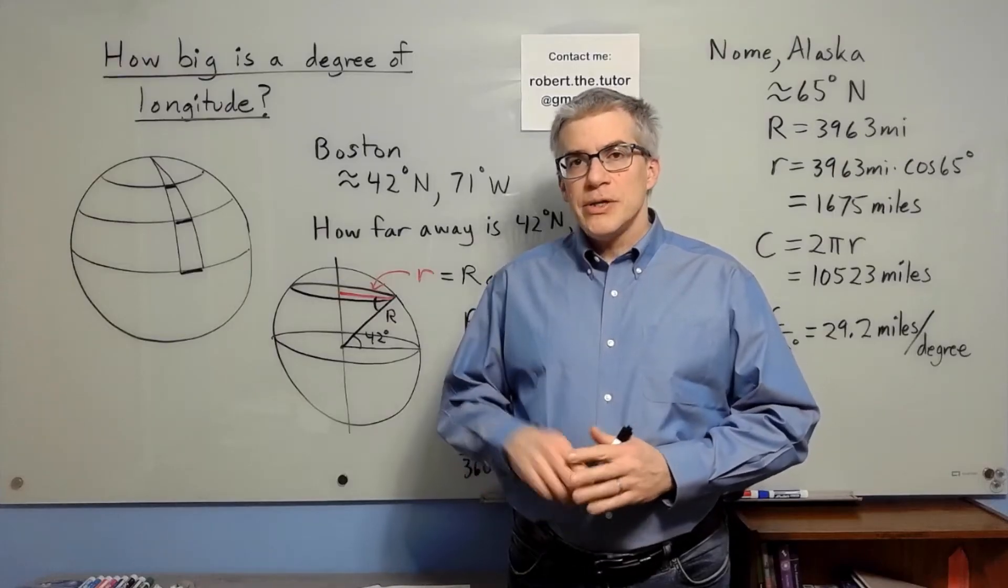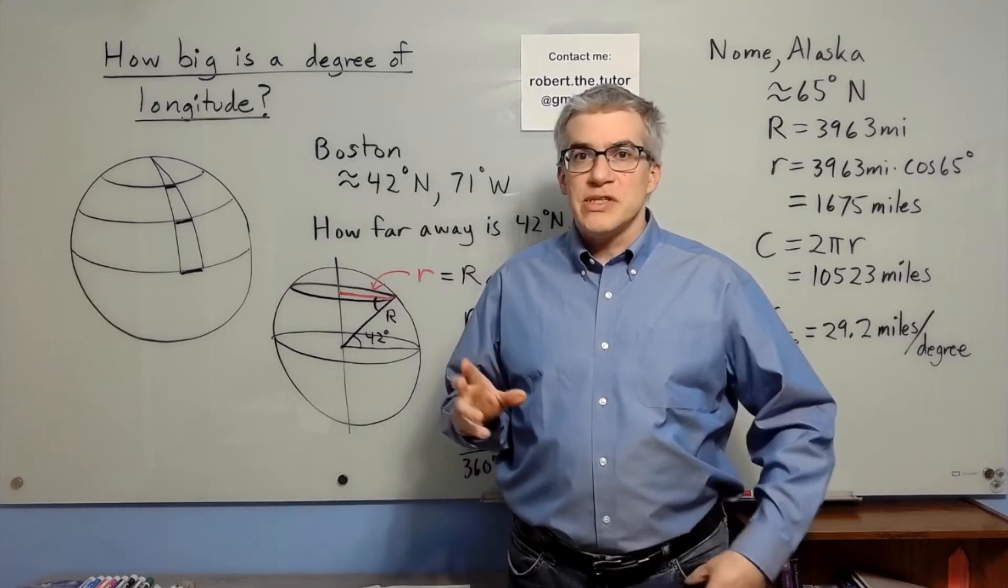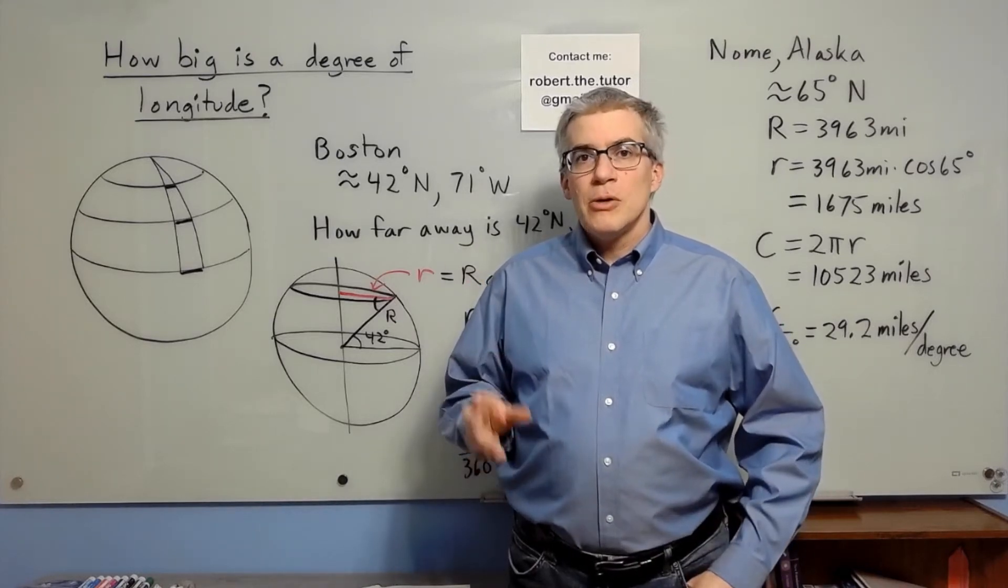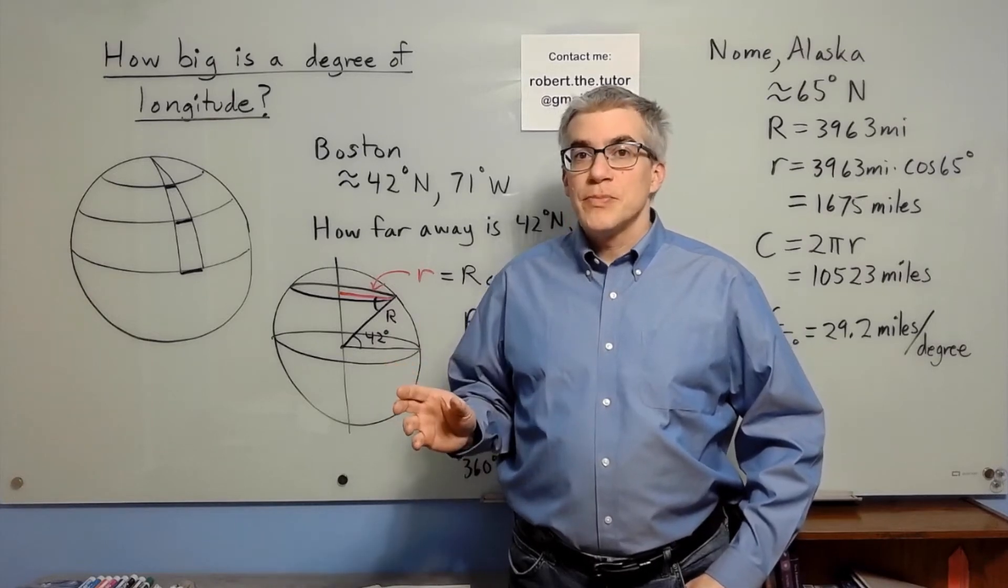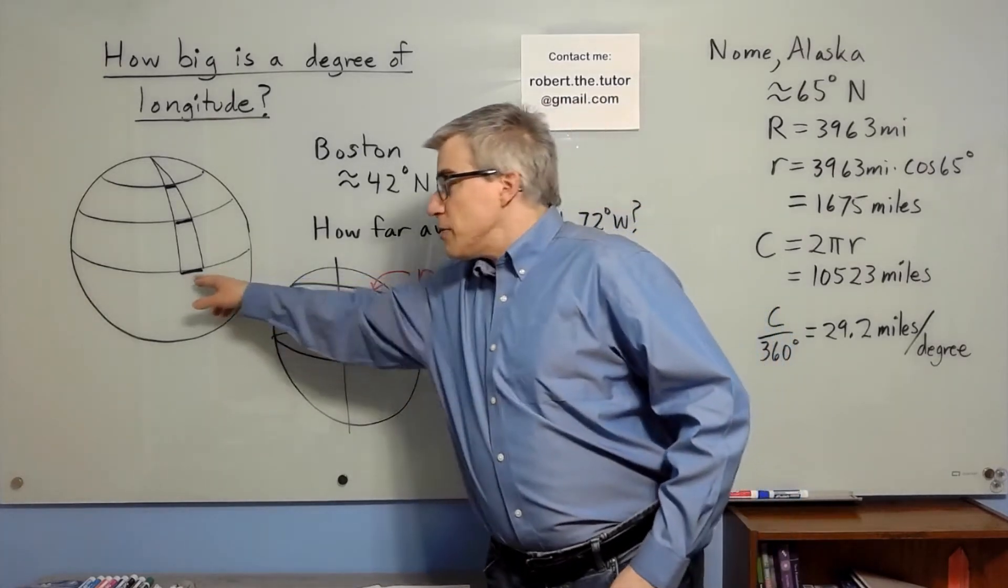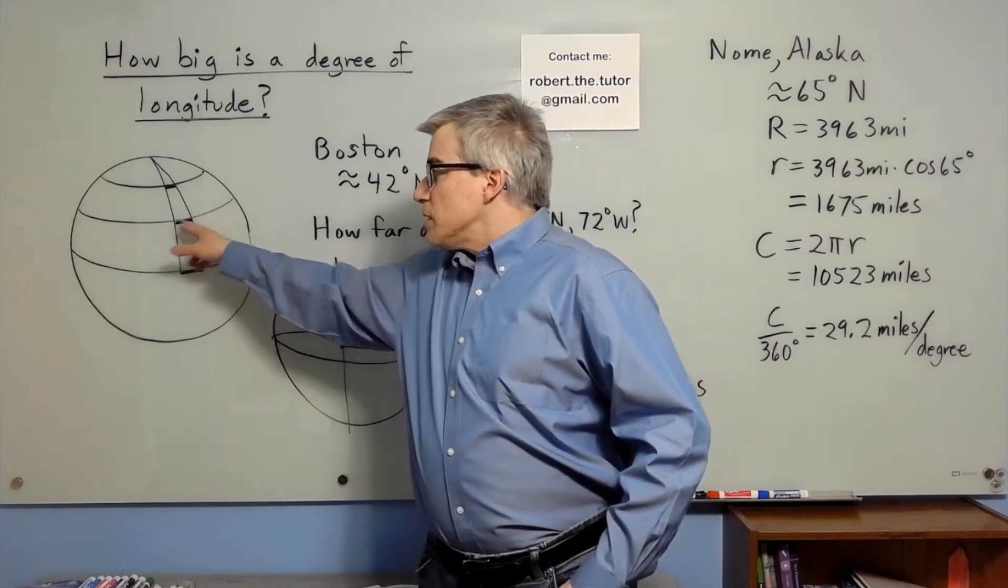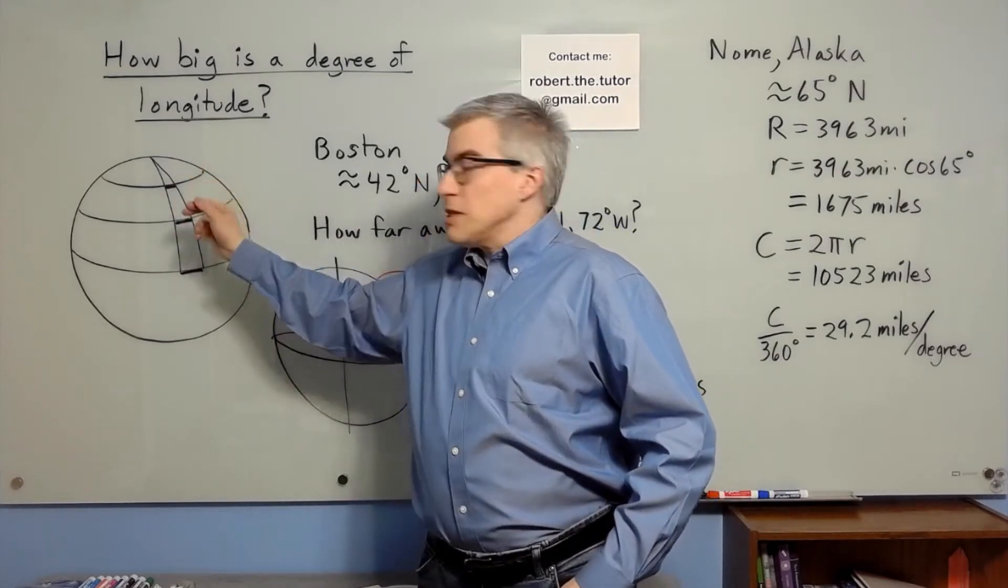Anywhere on Earth, a degree of latitude is always the same size, but a degree of longitude depends where you are. It's the biggest at the equator and it's smaller at higher latitudes. At the North Pole it would be zero.